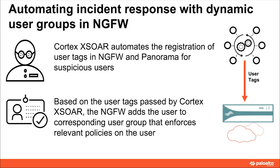Cortex XDR provides the ability to automate registration of user tags in next-generation firewalls and Panorama. This helps in developing playbooks around powerful use cases such as automatic creation of tags for suspicious users. Based on the user tags passed by Cortex XDR, the next-generation firewall adds the users to corresponding user groups that enforces relevant policies on the users.